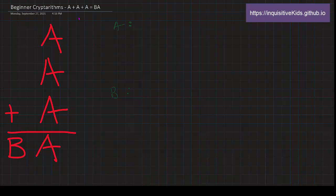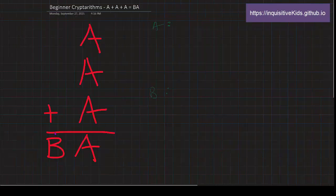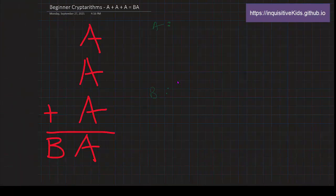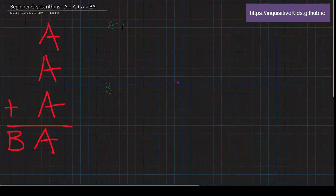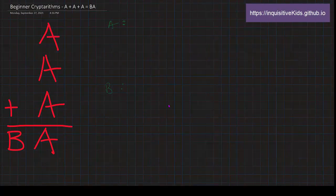Say A was 9 — the furthest three 9s could get up to would just be 27. So B can only be 1 or 2.